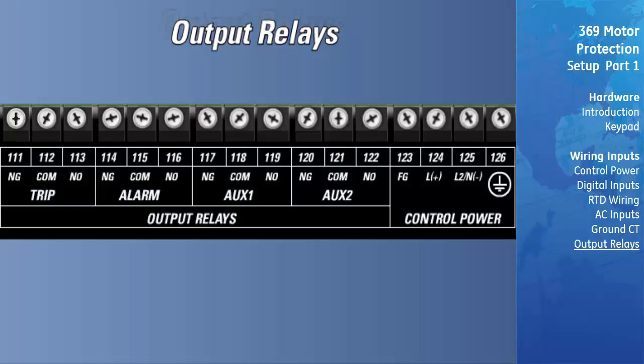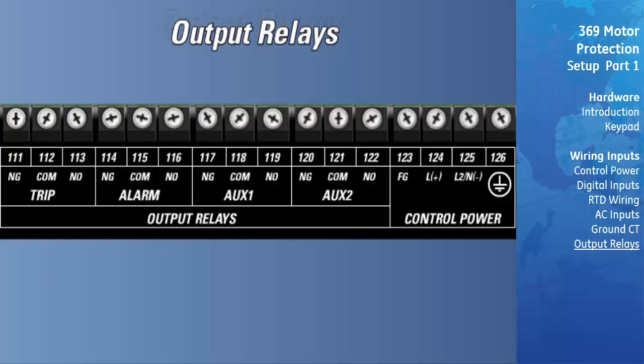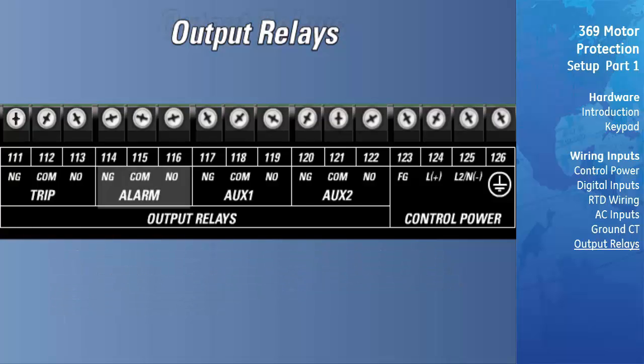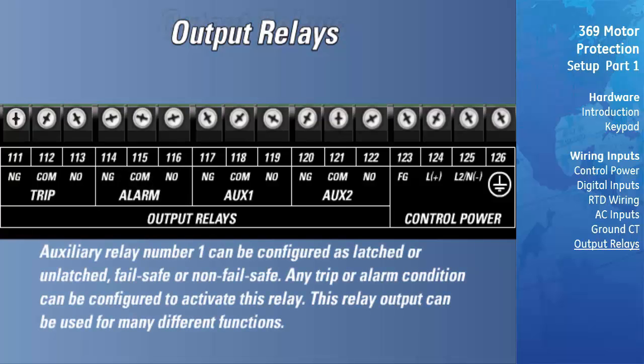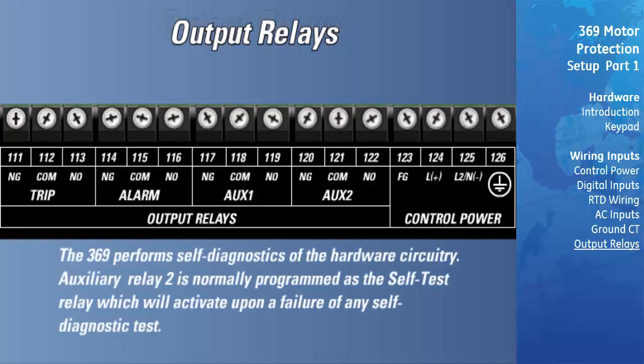The following is a brief description of each of the relay outputs. The TRIP relay: The main TRIP coil of the motor breaker should be connected to the TRIP relay contacts of the 369. In the case of a motor starter, the TRIP contacts should be wired such that they are in series with the start and seal in. The alarm relay output: Protection and control elements set this relay output to the activate state when alarm setpoint levels have been reached prior to motor shutdown. Auxiliary relay number 1: Auxiliary relay number 1 can be configured as latched or unlatched, failsafe or non-failsafe. Any TRIP or alarm condition can be configured to activate this relay. This relay output can be used for many different functions. For example, its closure could send a TRIP signal to an upstream device if the motor starter interrupting rating is less than the maximum fault current. Auxiliary relay number 2: The 369 performs self-diagnostics of the hardware circuitry. Auxiliary relay number 2 is normally programmed as the self-test relay, which will activate upon a failure of any self-diagnostic test.